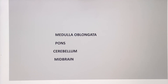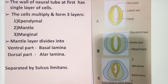Hello students, today we will discuss the development of the medulla oblongata, pons, cerebellum, and midbrain, in continuation with the lectures on the development of the CNS. From previous knowledge, we know that the wall of the neural tube at first has a single layer of cells.